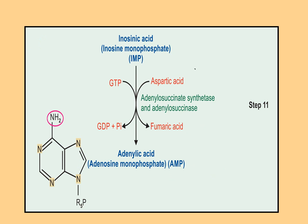From inosine monophosphate, IMP, both adenosine monophosphate, AMP, and guanosine monophosphate, GMP, are formed. For AMP formation: adenylosuccinate synthase is required in a two-step reaction. Aspartate is converted to fumarate, GTP is converted to GDP and phosphate, and adenosine monophosphate is formed.